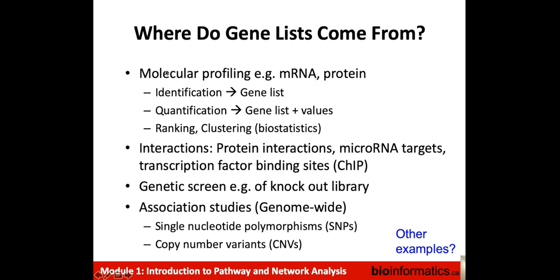Where do gene lists come from? There are many types of genomics data types, and there are many ways to get gene lists from these data types, and the gene lists have different meanings. For instance, molecular profiling — like measuring all the mRNA transcripts or protein levels in a sample — can help us identify molecules that are important for our sample and generates a gene list. We might also get quantification values. We can also rank or cluster samples using biostatistical methods that generate rankings or clusterings, which can also generate gene lists, like the set of genes associated with a cluster.